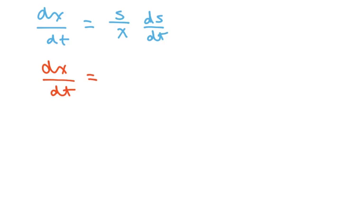Therefore, your dx with respect to t equals s over x times ds over dt. So dx with respect to t is, s is 10, and our x we already got, is 5 square root of 3. And then our derivative, the speed is 240. That was given to us.